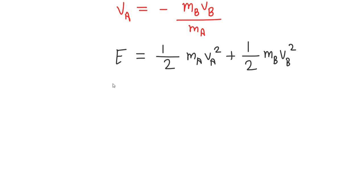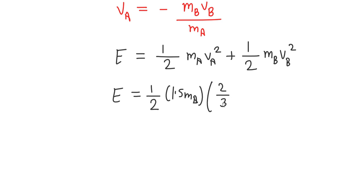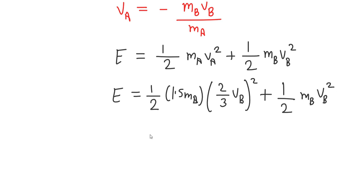Substituting, we get: E equals one-half times 1.5 m_b times (two-thirds v_b) squared plus one-half m_b v_b squared.